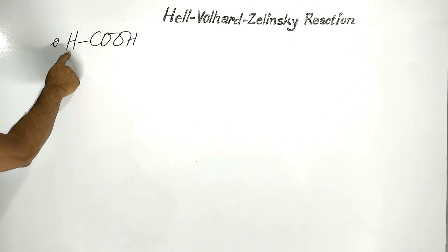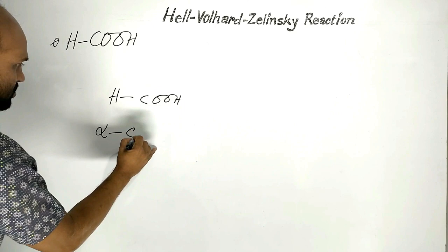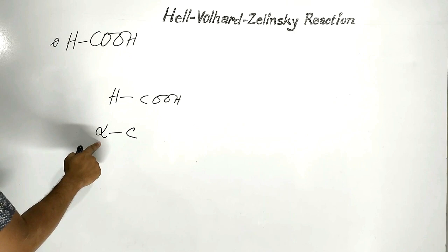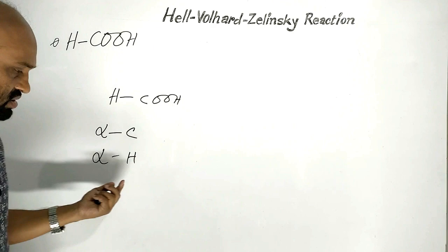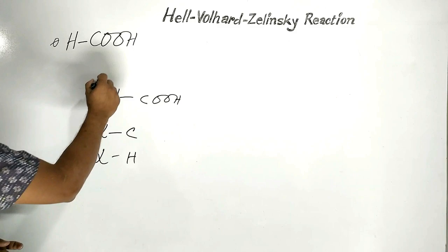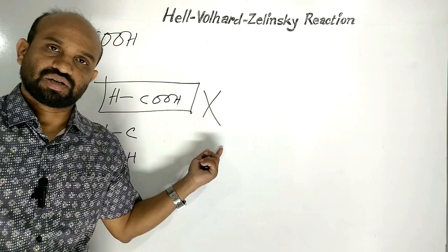Finally, metanoic acid (formic acid) has no alpha carbon because there is no carbon linked up with the functional group carbon. Therefore there is no alpha hydrogen, and so no replacement of alpha hydrogen by a halogen atom occurs. That is why metanoic acid does not undergo the HVZ reaction due to the absence of alpha hydrogen atoms. This concludes the lesson on HVZ reaction.